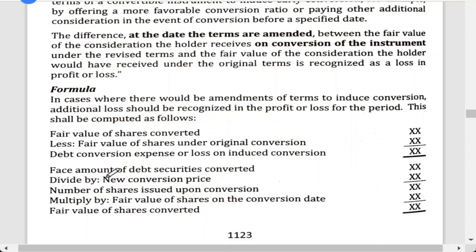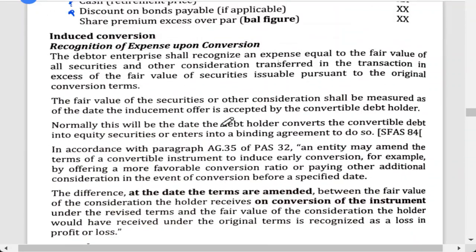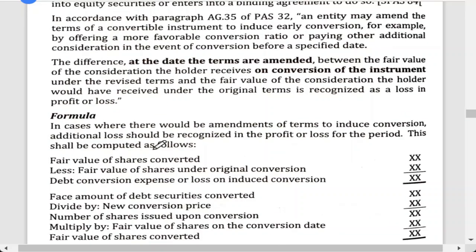When accounting for induced conversion, first compute the debt conversion expense. The formula is: fair value of shares converted minus the fair value of shares under original conversion equals the debt conversion expense, or the loss on induced conversion. To get the fair value of shares converted: face amount of debt securities converted divided by the new conversion price gives the number of shares issued upon conversion, multiplied by the fair value of shares on the conversion date.